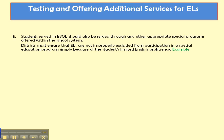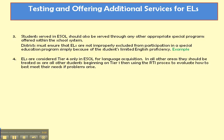Now we're going into part four of the ESOL information. We've just finished talking about how just because students are in ESOL doesn't mean they can't be in other special programs such as special education or gifted education. English learners are considered tier four only in ESOL for language acquisition. In all other areas, they should be treated as all other students, beginning on tier one and then using the response to intervention process to evaluate how to best meet their needs if problems arise.